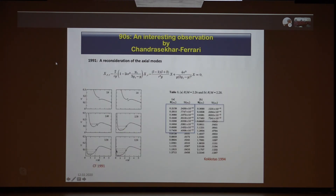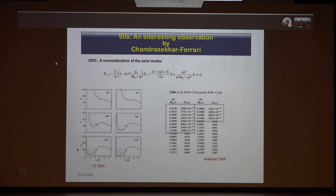Inside this cavity you can have semi-bound states. These perturbations, trapped inside, cannot easily escape — they must penetrate the potential barrier, so they do not damp very fast. If we then assume a rotating star, these perturbations can be amplified by the rotation and become unstable. This is the equivalent of super-radiance, which I will discuss in the next slides.